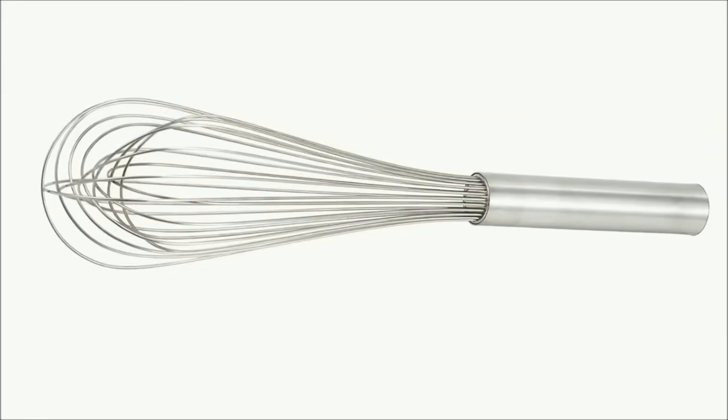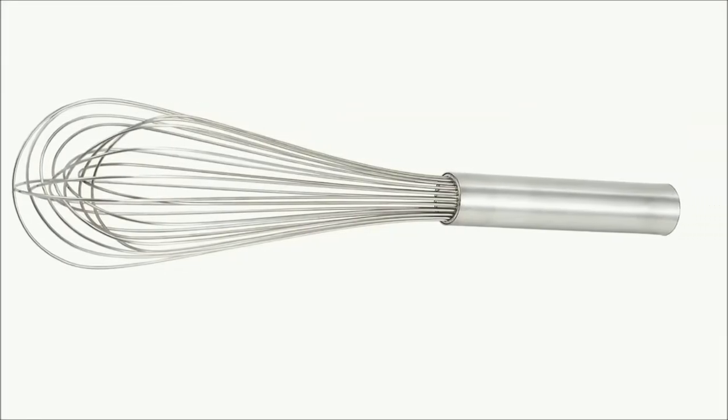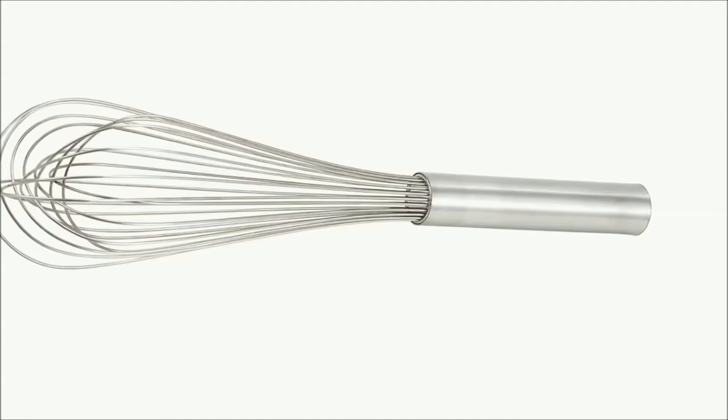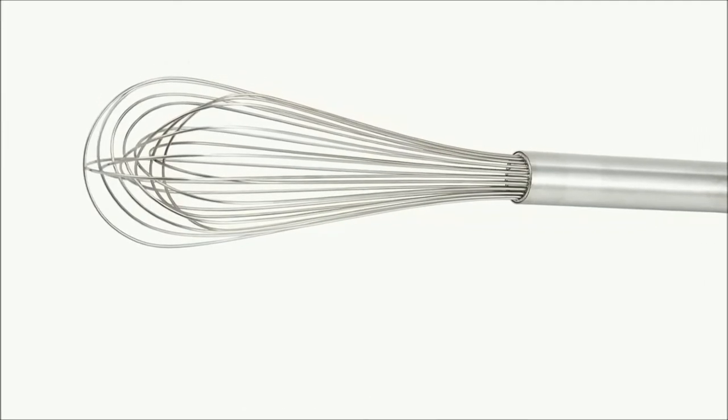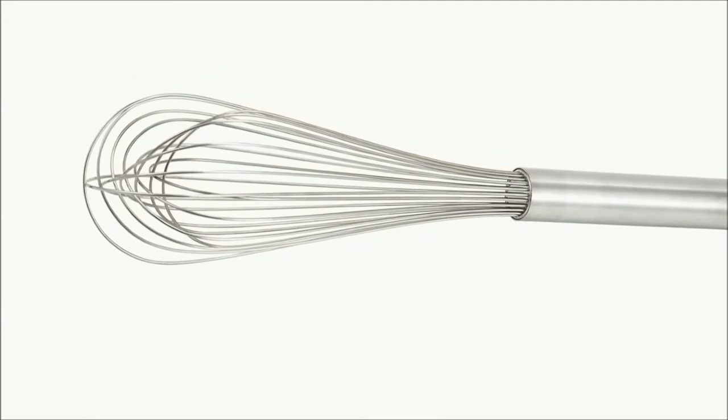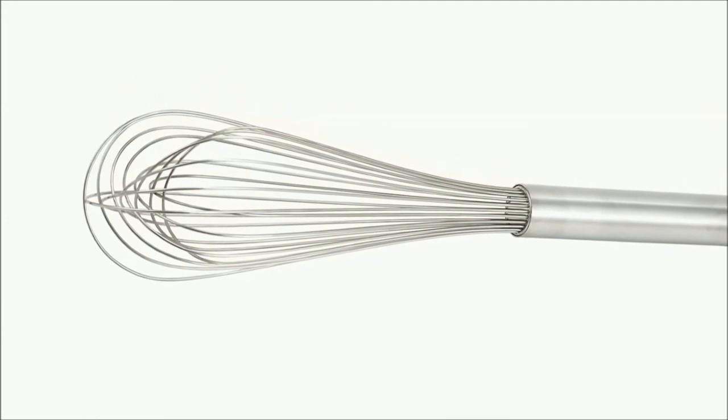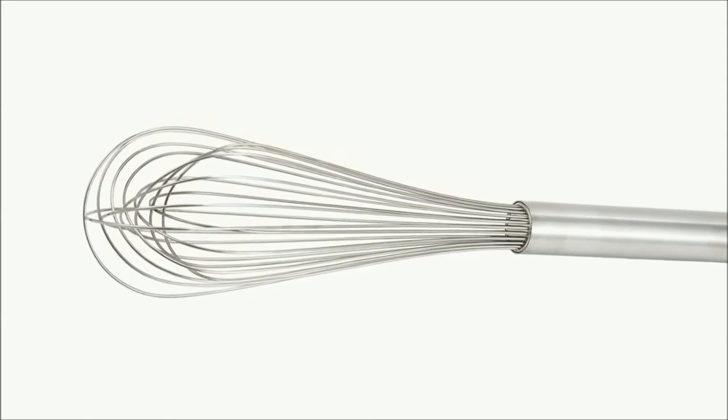If you want the best cheap whisk, Winco's stainless steel piano wire whip is about half the price of OXO Good Grips Whisk. Its only downside is stainless steel handle that is less comfortable than the OXO's rubber handle and can get slippery. On the other hand, Winco's metal handle won't melt even if it gets too hot.